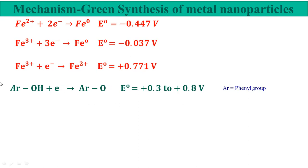This half-cell is for the polyphenolic compounds present in the plant extract, as shown here. Ar represents the phenyl group, and the reduction potential ranges from 0.3 to 0.8 V, because there are many varieties of phenolic compounds having different reduction potential values, so a range is given.